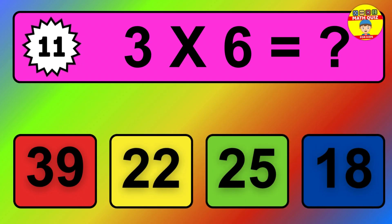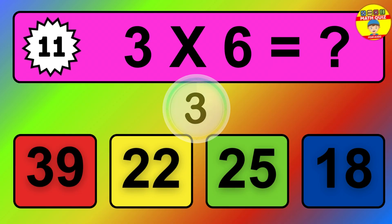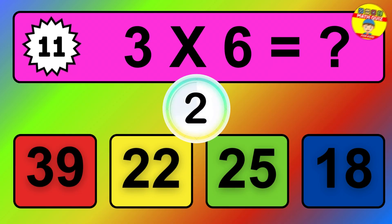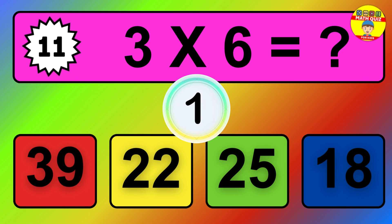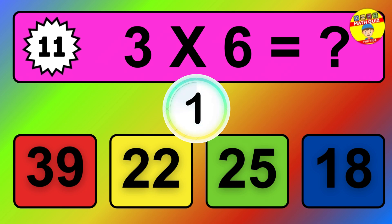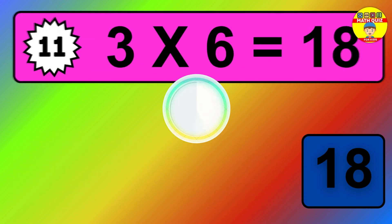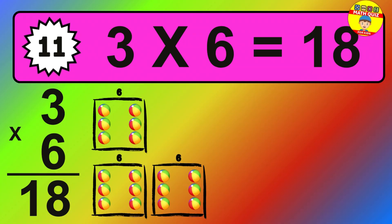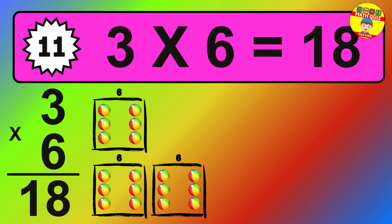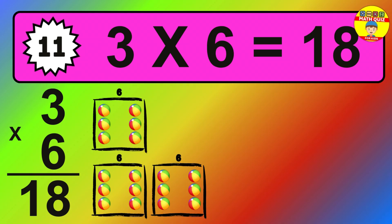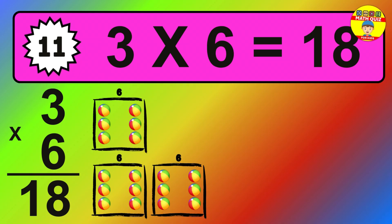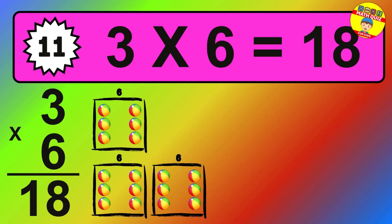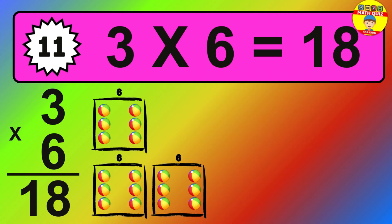Question eleven: three times six equals what? The answer is: three times six is 18. To calculate, we have three groups with six balls each one. So how many balls do we have? 18 balls.